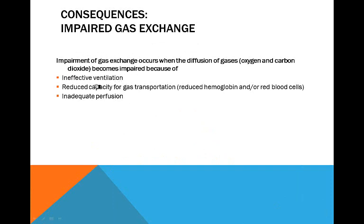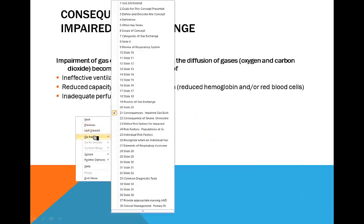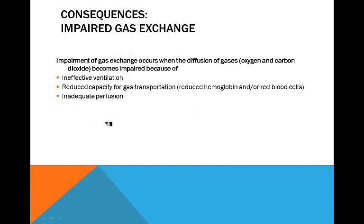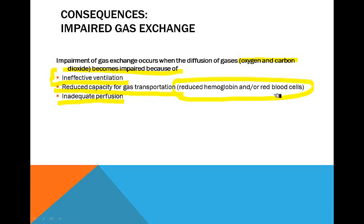Consequences of impaired gas exchange: impairment occurs when the diffusion of oxygen and carbon dioxide becomes impaired because of ineffective ventilation, reduced capacity for gas transport, or inadequate perfusion. Reduced capacity for gas transport from reduced hemoglobin or red blood cells — for example, a patient with sickle cell anemia has collapsing red blood cells, which decreases their capacity for carrying oxygen.